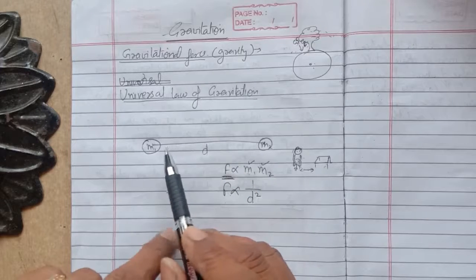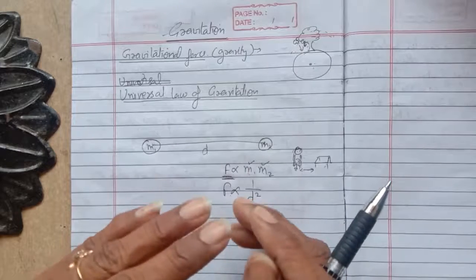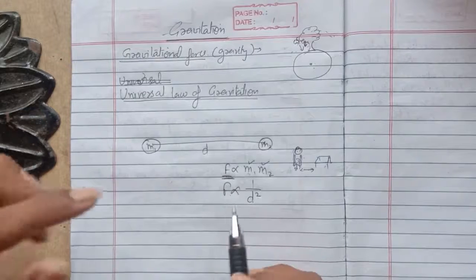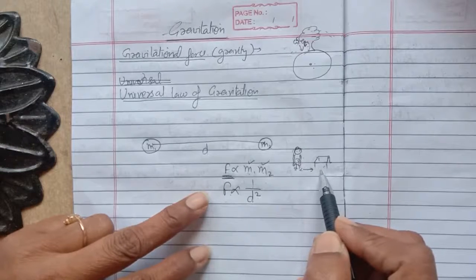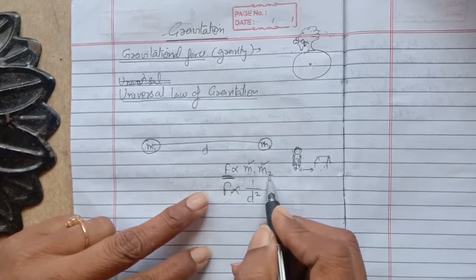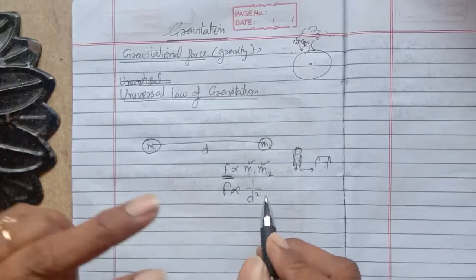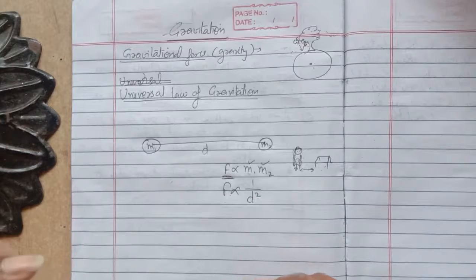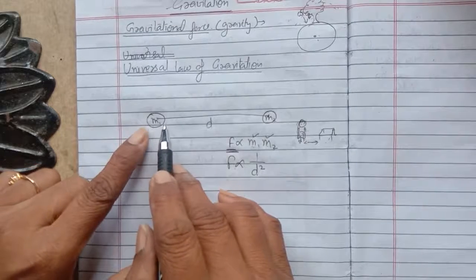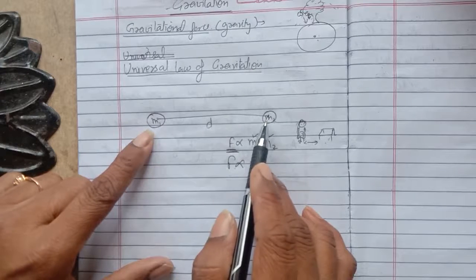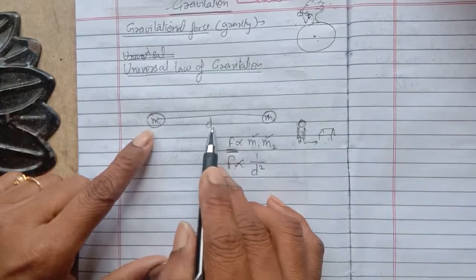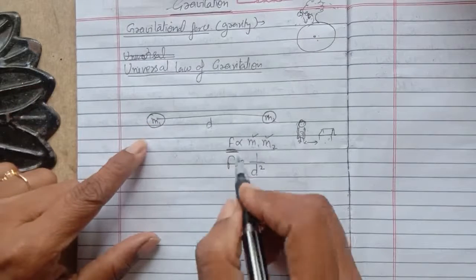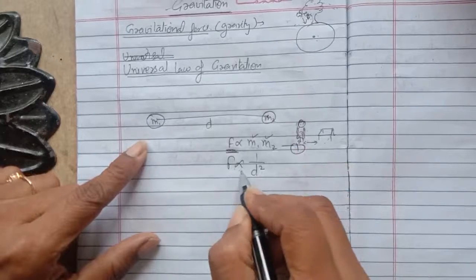So the law states: every particle of matter in the universe attracts every other particle with a force which varies directly as the product of the masses of the two particles and inversely as the square of the distance between them. To write this law mathematically: let the masses of two objects be M1 and M2, placed at a distance D. According to Newton's universal law of gravitation, F is directly proportional to M1×M2 (equation 1), and inversely proportional to 1/D² (equation 2).